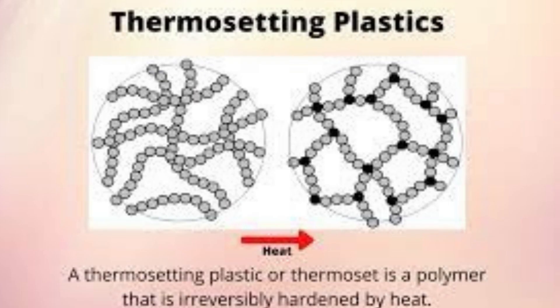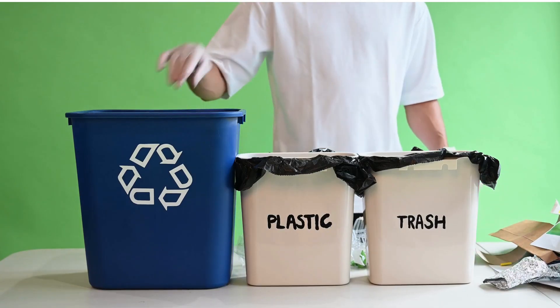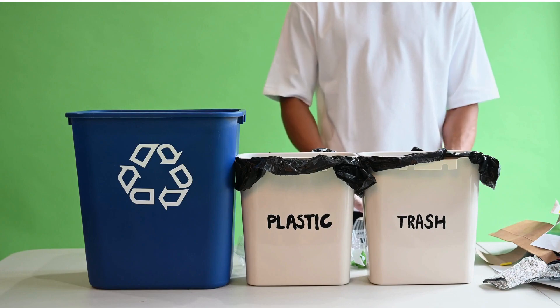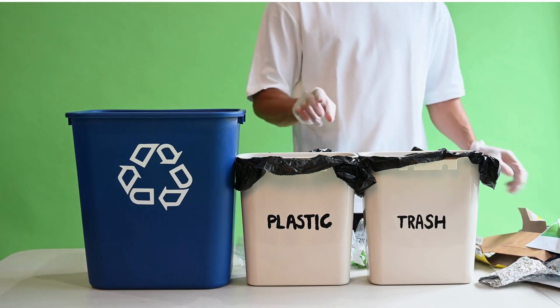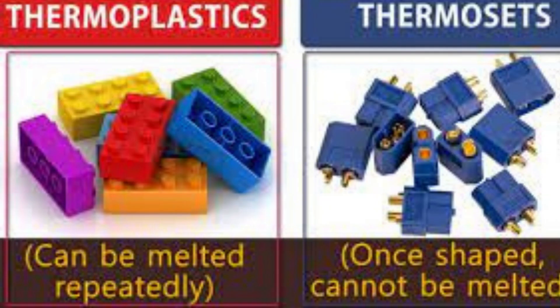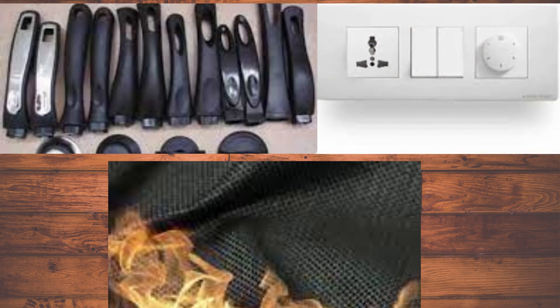Thermosetting plastics are those plastic polymers which cannot be molded again and again by use of heat. These are also known as thermoset polymers. Examples of thermosetting plastics are bakelite, melamine, etc. Thermosetting plastics are used in making handles of utensils, switches and fire-resistant fabric, etc.